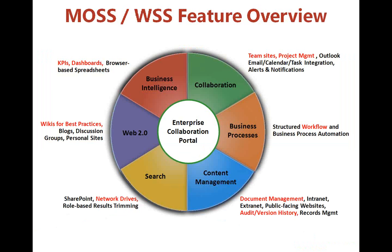Let's take a deeper look at MOSS and WSS. First, we have collaboration features, most notably team sites, and this allows groups of people within a department or across departments to collaborate together on a business activity. Included with this are a lot of project management features. Next, we have business process, which comes down to workflow — being able to automate different tasks and also manage tasks associated with the business activity.